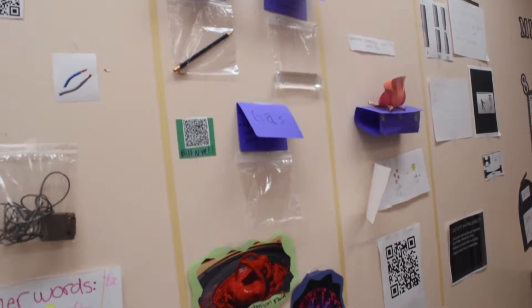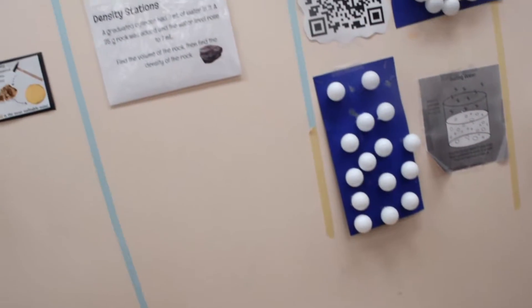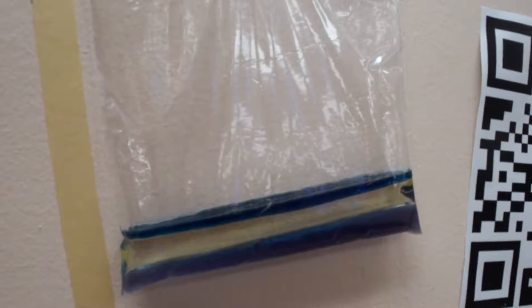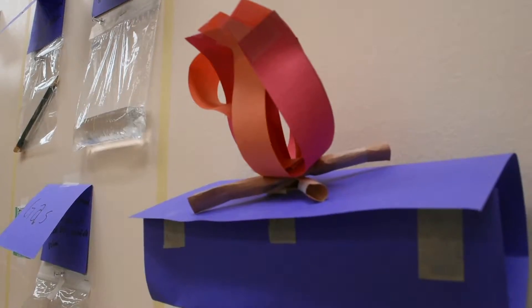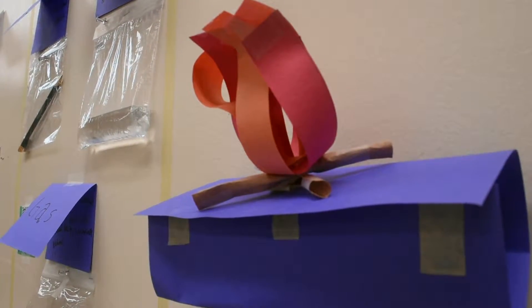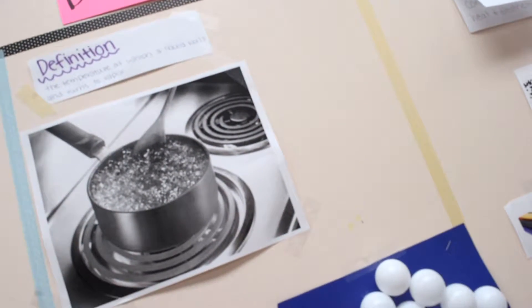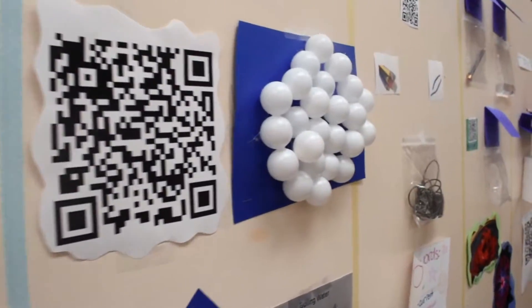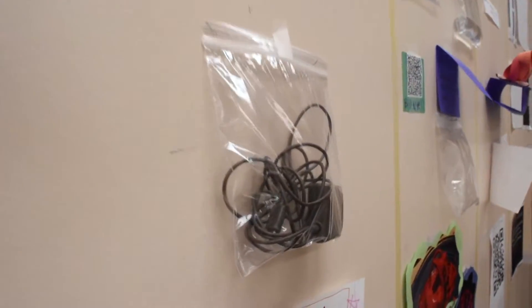And then they were asked to include the following things in their section: They had to have the definition of the word, a 3D something that was representative of that word, a couple pictures, a QR code that leads to a video or alternate explanation of the term, and any other key words.